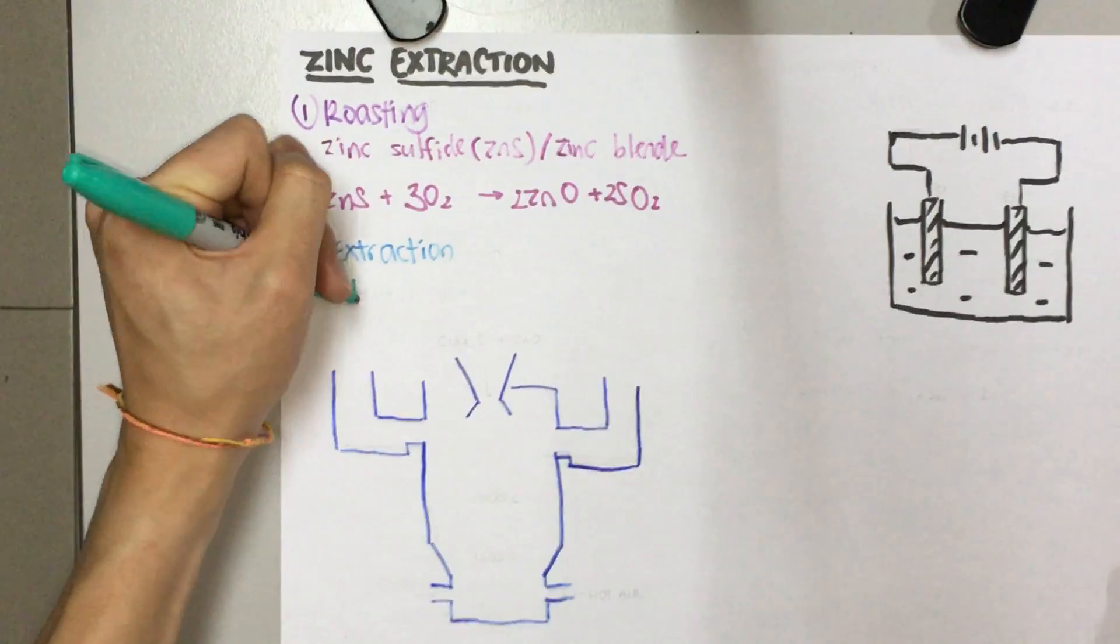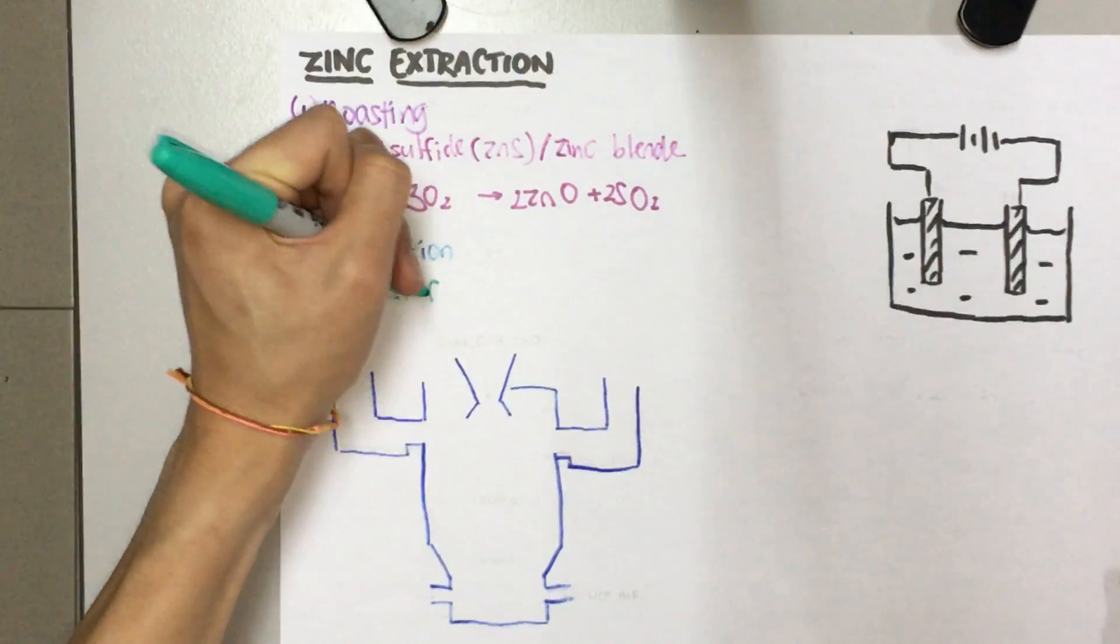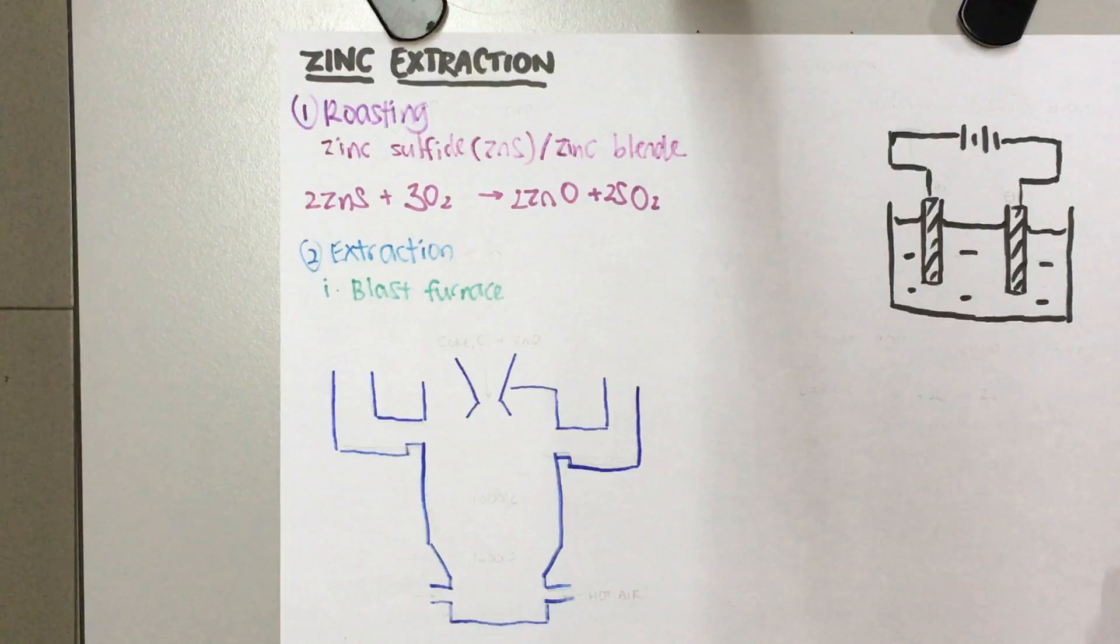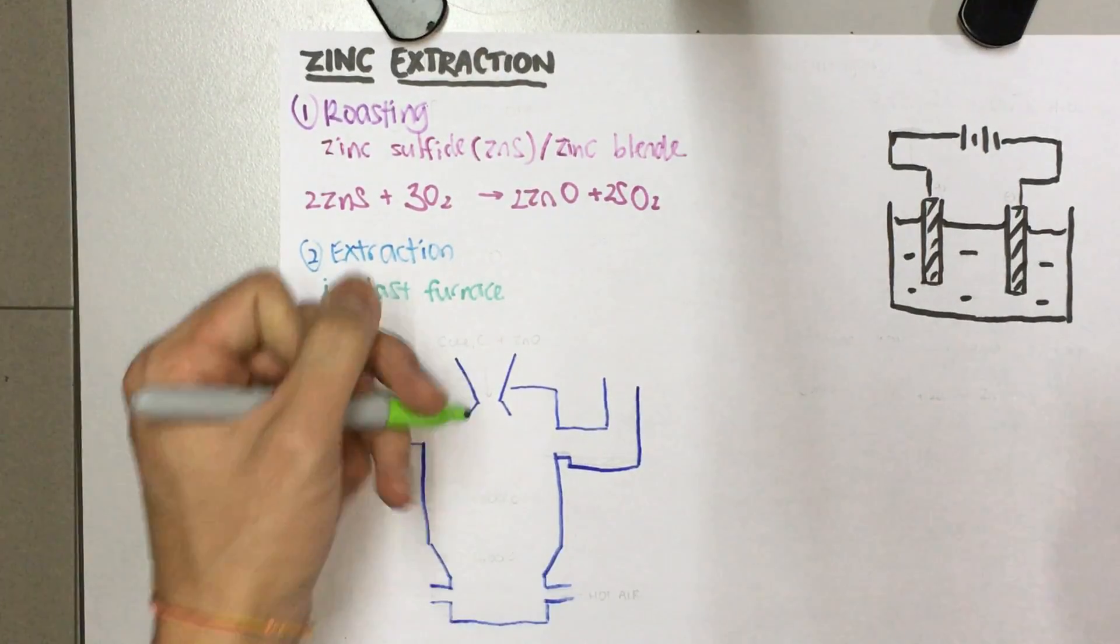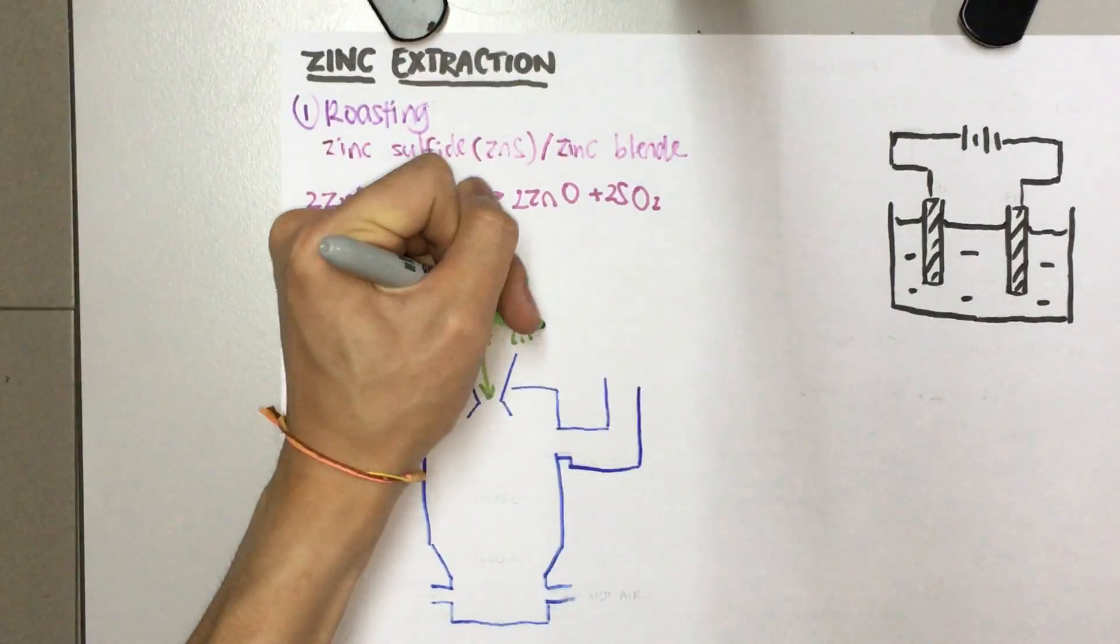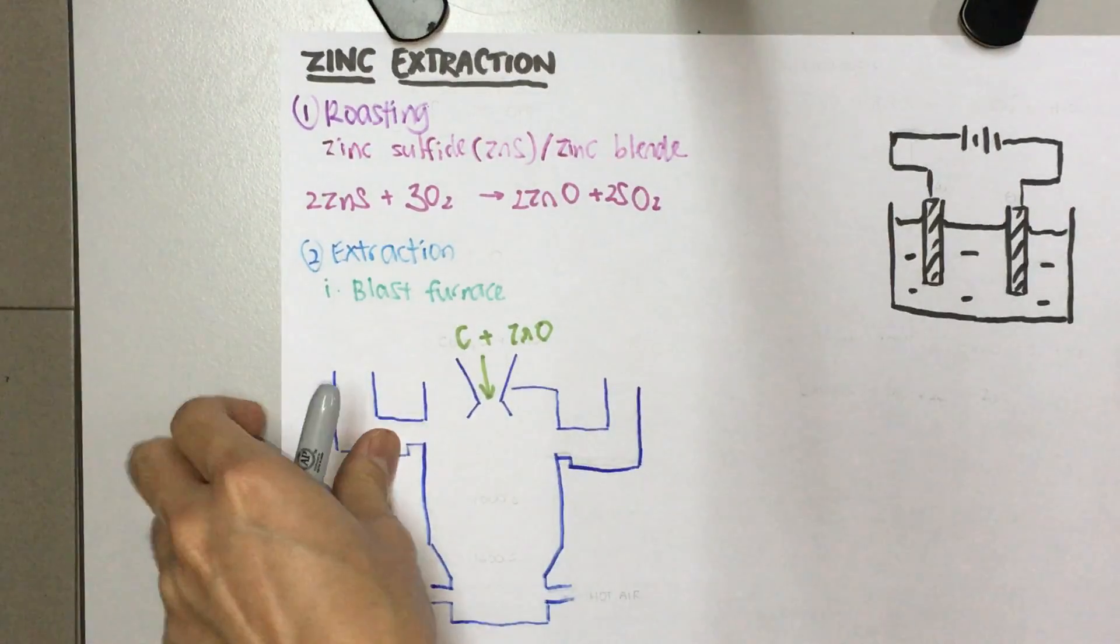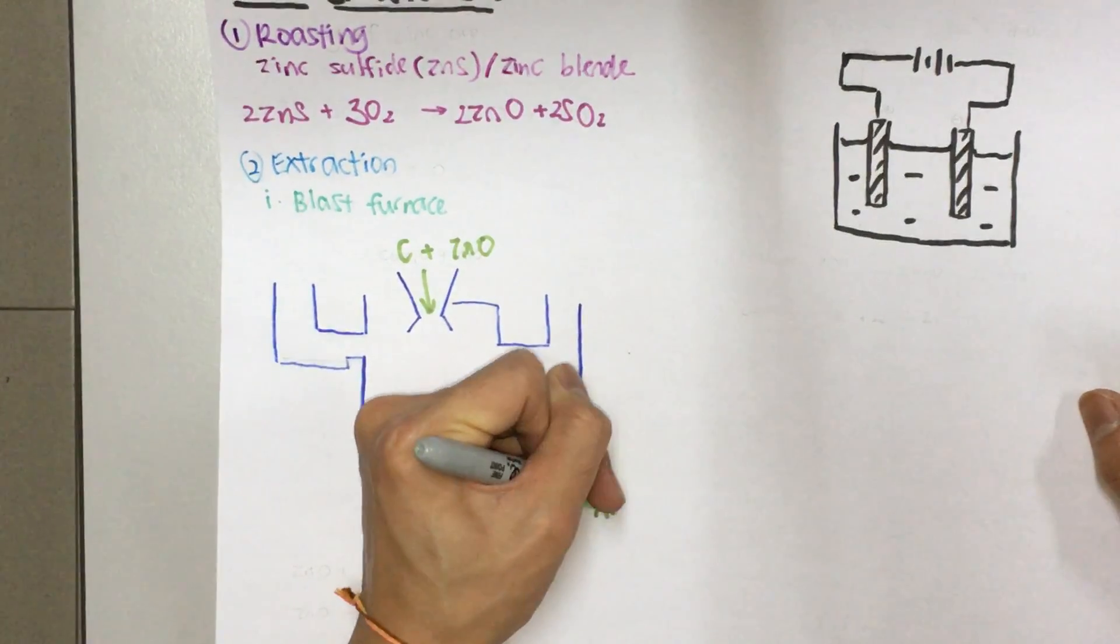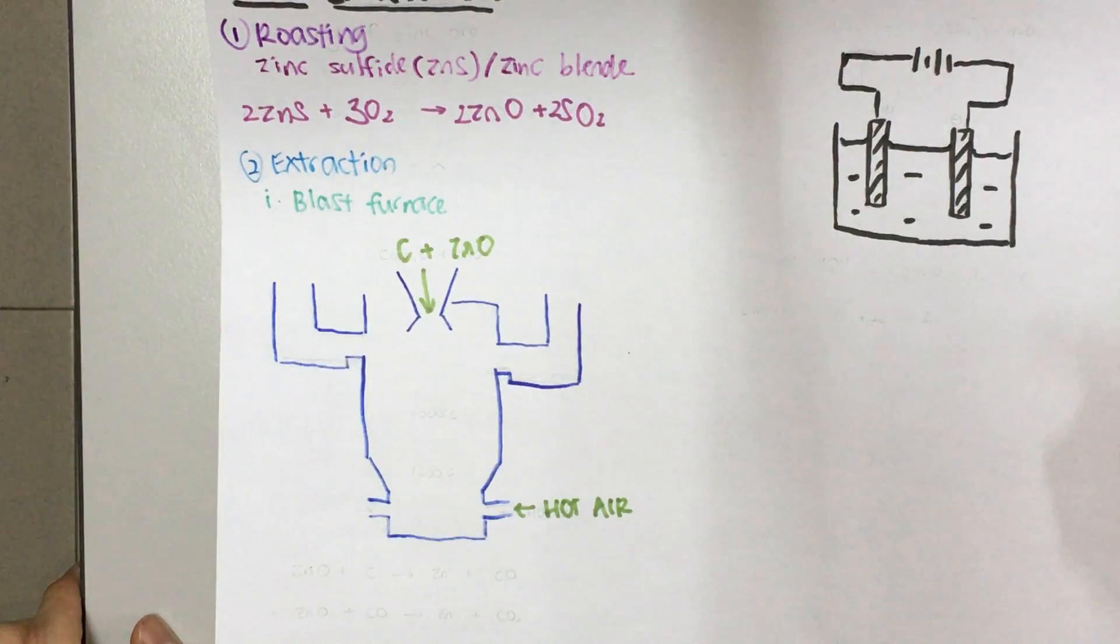In the blast furnace method, similarly to iron, it's going to react with coke, which is carbon. Because carbon is a very good reducing agent, it can reduce zinc oxide to zinc alone. In this blast furnace, at the top, carbon is going to be added in along with zinc oxide. And hot air will enter via here. That's where the reaction happens.